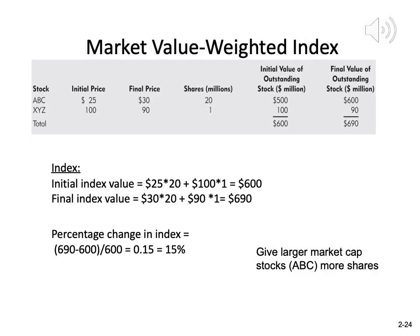Now let's use the same two stocks to construct the market value-weighted index. Instead of just looking at stock price, we look at the total value of each stock. The initial value of ABC is $500 million; the initial value of XYZ is only $100 million. So the weight assigned to ABC is much higher than XYZ. The final values are $600 million for ABC and $90 million for XYZ, giving a total of $690 million versus $600 million. The percentage change in the index is actually a 15% capital gain, because a much higher weight is placed on the winning stock ABC, and a very small weight on the losing stock XYZ.